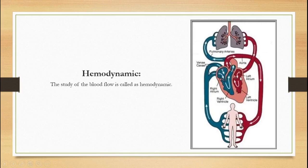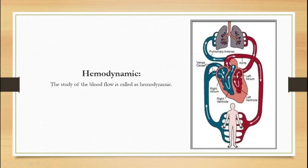Oxygenated blood from the left atrium goes through the aorta to different body parts and through the capillaries to cells, where oxygen is used for energy release through respiration. Oxygen is required for the generation of energy in the form of ATP, and CO2 is released as a byproduct. This deoxygenated blood is carried in the veins to the right atrium, through the ventricle, to the lungs, where through the alveoli via partial pressure, CO2 is exhaled and oxygen is taken in, returning oxygenated blood to the left atrium.